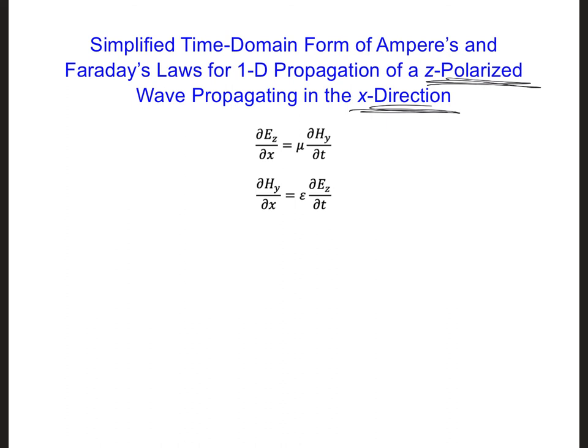In that module, we started with the time domain form of Maxwell's equations, and we simplified Ampere's and Faraday's laws to only one dimension, the x direction, for an electric field only oriented in the z direction. And we obtained the two equations that are shown here. Using the FDTD method, we solved these equations by approximating the partial derivatives using central differencing.